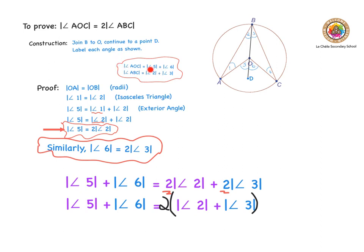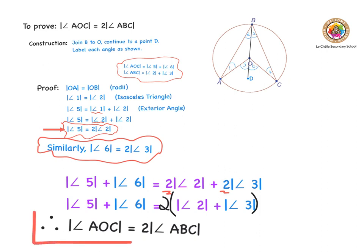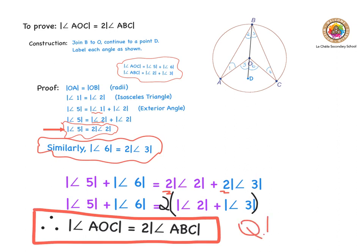Going back to the original statement, angle AOC equals angle five plus angle six, so I replace angle five plus angle six with angle AOC. Equally, two times angle two plus angle three is two times angle ABC. Therefore angle AOC equals two times angle ABC — which is exactly what we set out to prove. We draw the box around it and write QED.